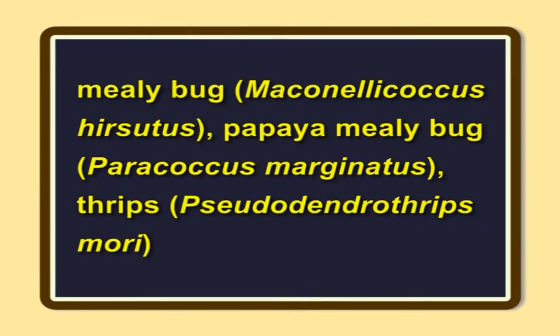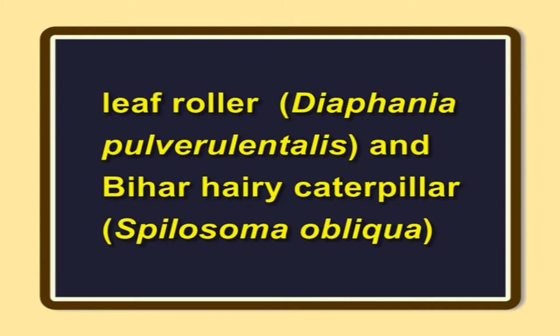Especially in the southern agricultural belt of India, insect pests such as Mealybug (Maconellicoccus hirsutus), Papaya mealybug (Paracoccus marginatus), Thrips (Pseudodendrothrips mori) are the major sucking pests, and leaf roller (Diaphania pulverulentalis) and Bihar hairy caterpillar (Spilosoma obliqua) are the defoliating pests, which in total contribute to bringing down the leaf yield by about 15 to 20%. These pests not only affect the leaf productivity, but also quality.